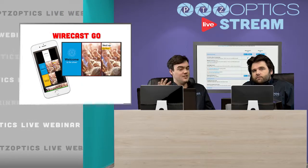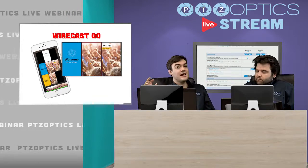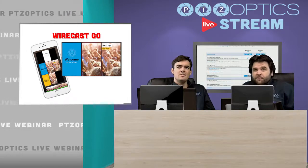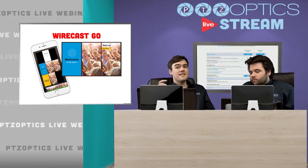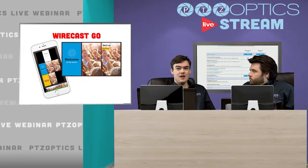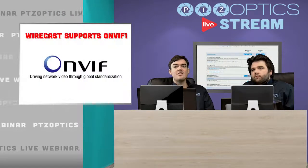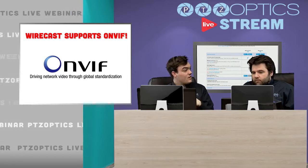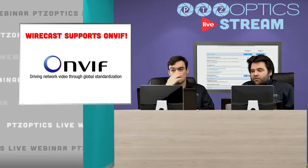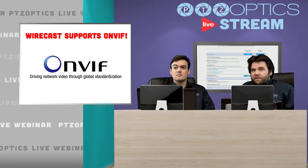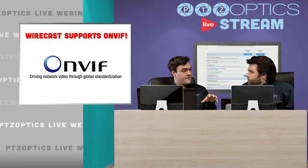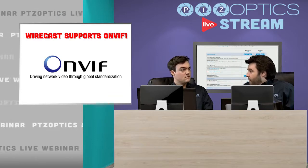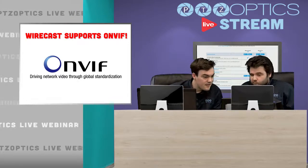Two things I found completely unique to Wirecast: one is Wirecast Go, which allows you to live stream from any phone — and it's only about $5.99 a month, which is very reasonably priced. The other is ONVIF Discovery, which allows you to automatically recognize ONVIF-compatible cameras right over your network. As long as you have a camera with ONVIF enabled, Wirecast will automatically find that RTSP feed and bring it up. It doesn't currently support camera control through ONVIF — just video — though ONVIF does support control, and people do use a separate ONVIF Device Manager alongside Wirecast to control cameras while recording the video feed.